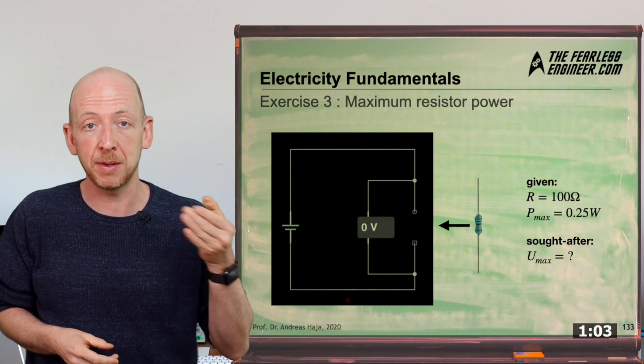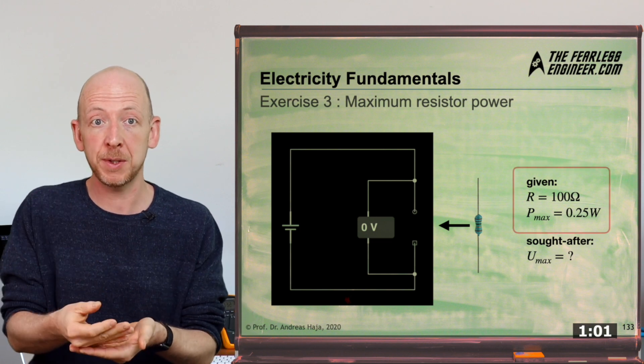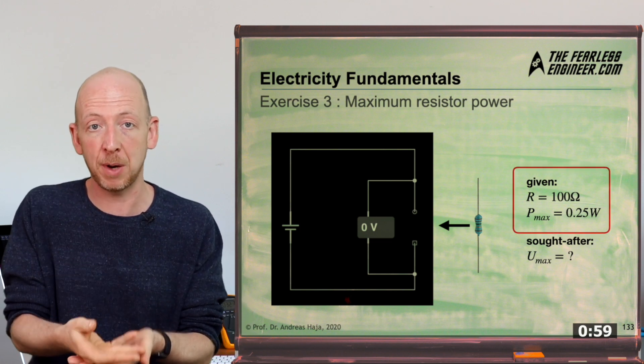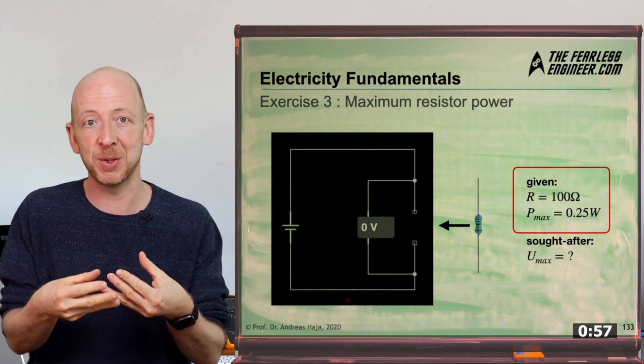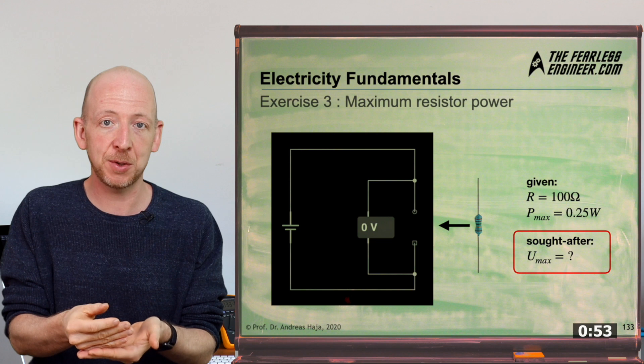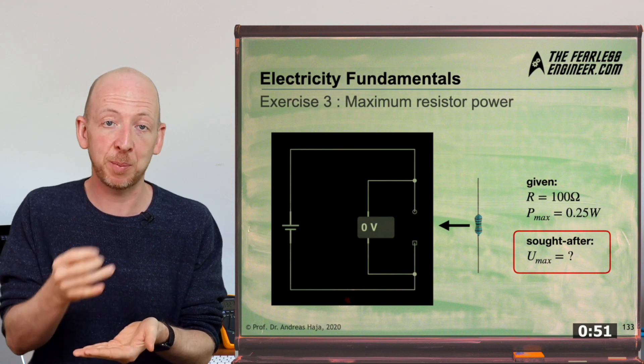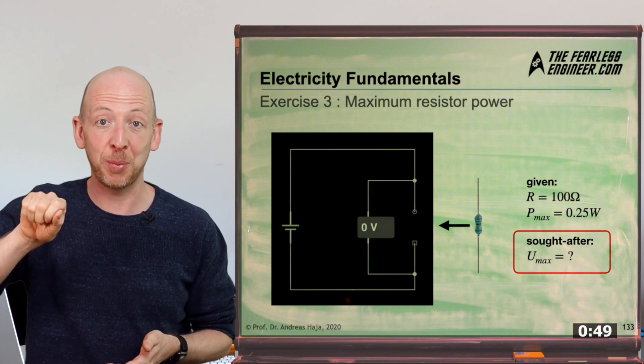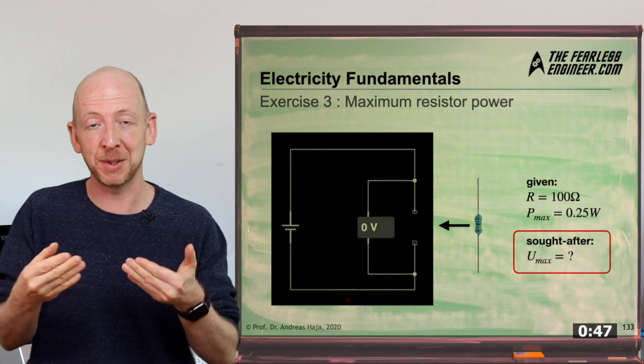Typical tasks could look like this. For example, a 100 ohm resistor with a quarter watt maximum power dissipation is to be integrated into a circuit. The question is what is the maximally permissible voltage drop at which the power limit is just barely not exceeded. Now switch to pause again, we'll see you in a moment when you have solved the task for yourself.